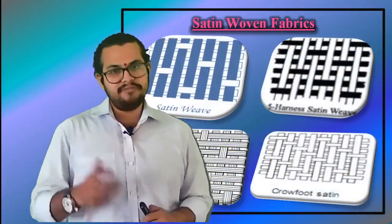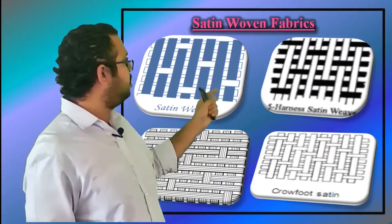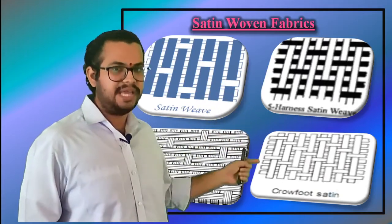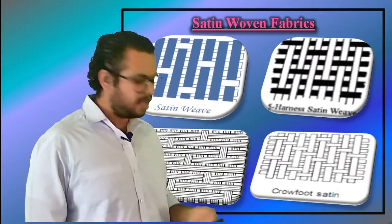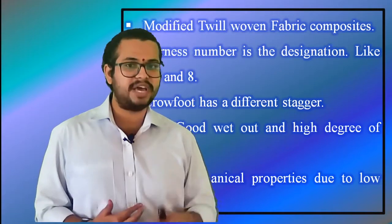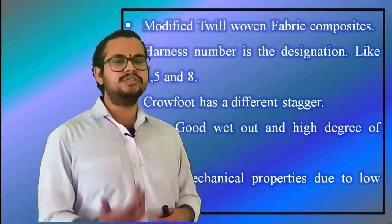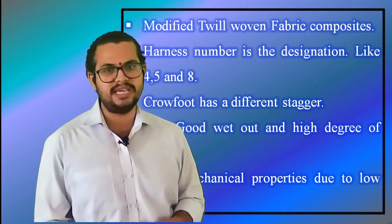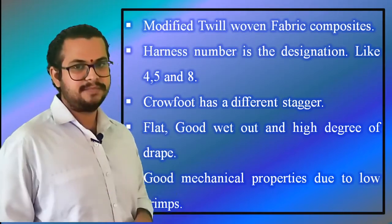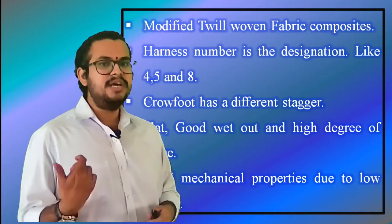Satin woven fabric. Satin weaves are fundamentally twill weaves modified to produce fewer intersections of the warp and the weft. The harness number — used as a designation, typically 4, 5, and 8 — is the total number of fibers crossed and passed under before the fiber repeats the pattern. A crowfoot satin weave is a form of satin weave with a different stagger.